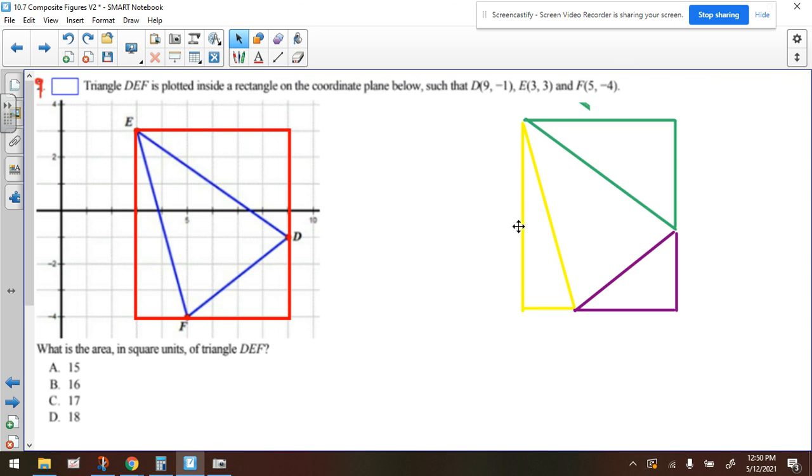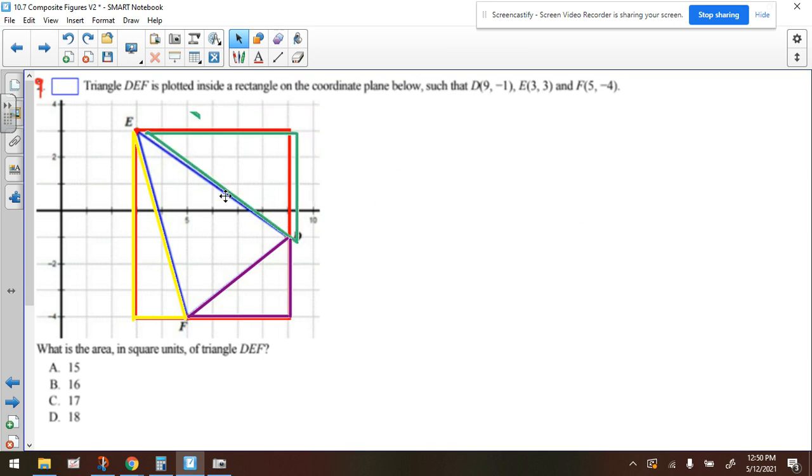And what we're going to do is we're going to find the area of all the little triangles that are formed outside of the blue triangle. So we have this yellow triangle, we have this purple triangle right here, and we have this green triangle right here.